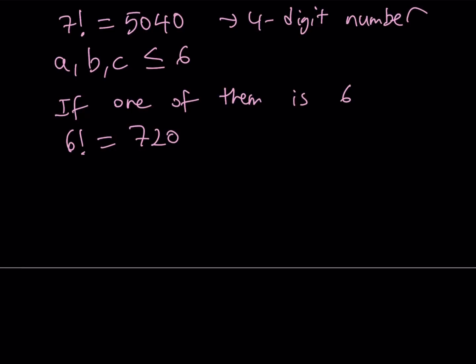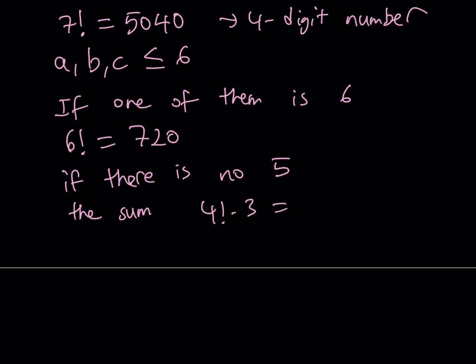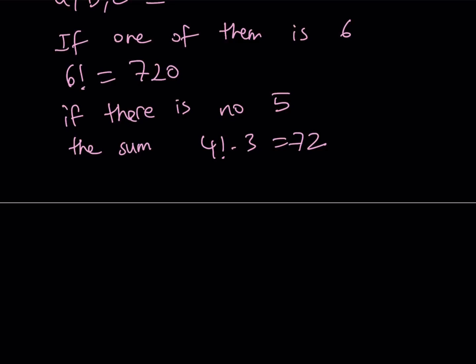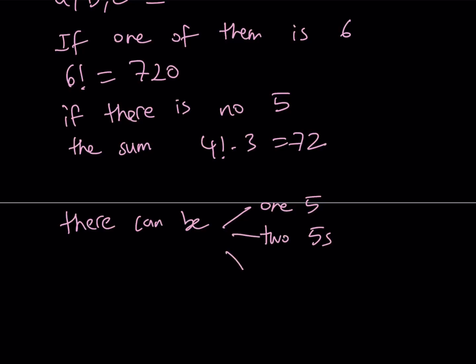We're going to talk about different options. For example, if there's no 5 — if none of the digits is a 5 — then the sum will be at most 4 factorial times 3, which is 72. That's not good because that's a two-digit number. So that means we have to have at least one 5. How many 5s can we have? There can be one 5, two 5s, or three 5s.